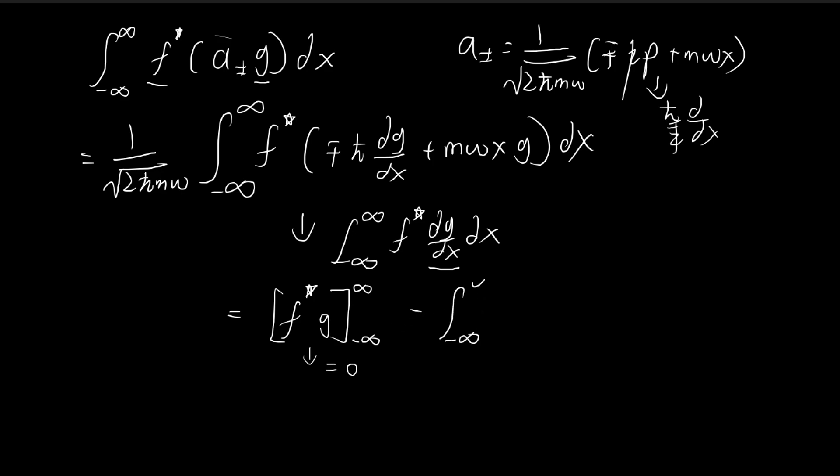And then we minus the integral. And then now we differentiate this term. So we have df*/dx times dx. And because this whole term is zero, we get this expression. So there we have it. So using this, this is going to help us with that proof.